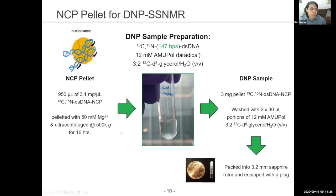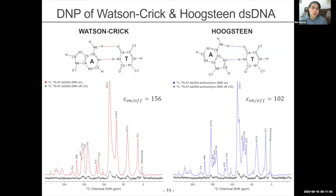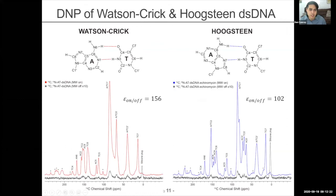When we ran quick 1D proton-to-carbon CP experiments, we see the enhancement of these samples — very large enhancements for these DNA samples, whether just pure DNA or DNA with the echinomycin complex. We saw enhancements of over 100 to 150. The bases as well as the sugar residues have very good signal. The microwave-off spectra are also shown, but scaled up by a factor of 10 since otherwise they'd be very low in the baseline.